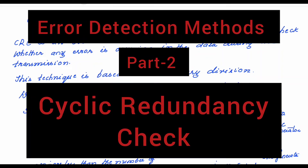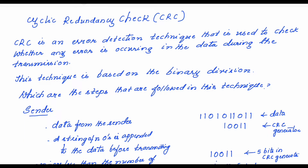Hello viewers, welcome back to my channel. Today's topic of discussion is cyclic redundancy check. This is one of the error detection methods in the data link layer. In the previous session, I explained about the single parity check, which is also an error detection technique in the data link layer.